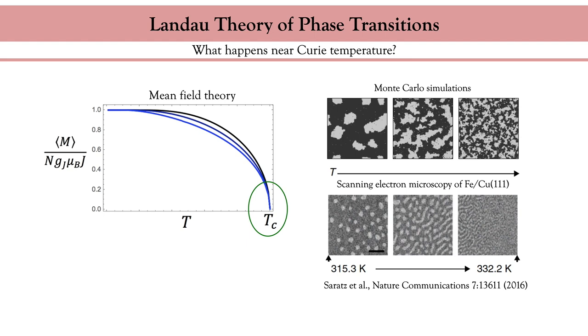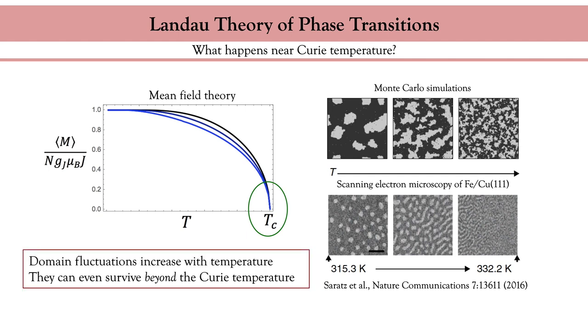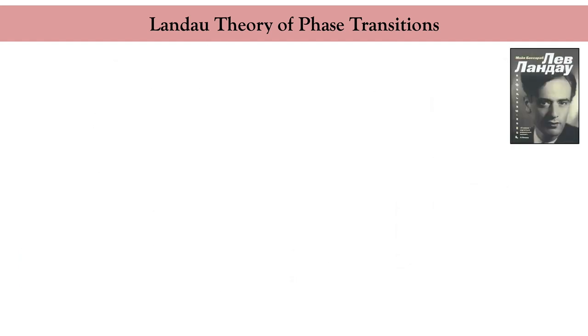At the bottom panel you have the experimental imaging of an iron copper bilayer obtained by scanning electron microscopy, also upon increasing temperature. What you see is that the ferromagnet shows magnetic domain fluctuations. These fluctuations are thermally activated so that the size of the magnetic domain reduces upon increasing the temperature. Close to Curie temperature you have so many small domain fluctuations that the overall magnetization of the system vanishes. Notice that small magnetic domains survive even above Curie temperature but they fluctuate so much that the average magnetization remains zero.